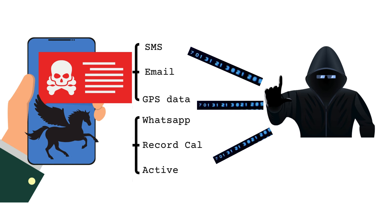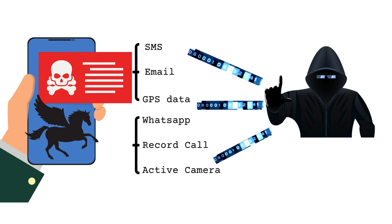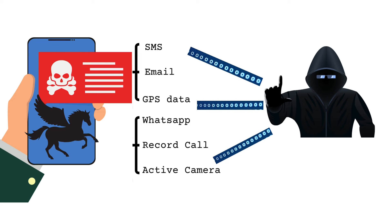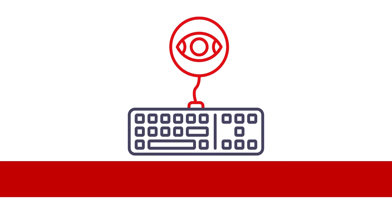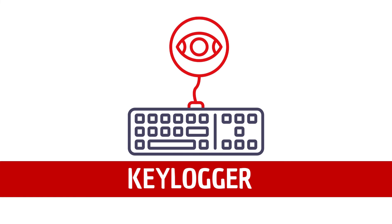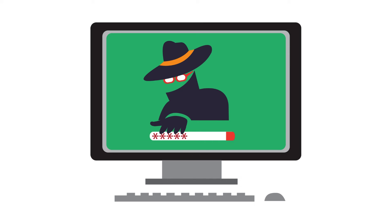Once installed, spyware can access a vast amount of personal data including text messages, emails, calls, and can even activate the camera and microphone for surveillance purposes. Next are keyloggers — they secretly record every keystroke, capturing sensitive information like usernames, passwords, and credit card details.